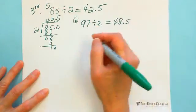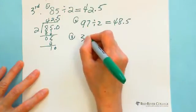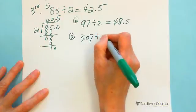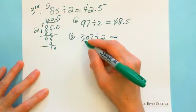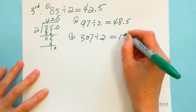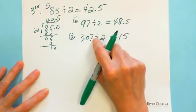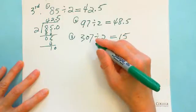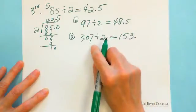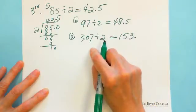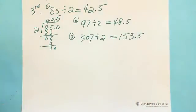Even with 3-digit numbers: 307 divided by 2. 3 divided by 2 is 1 with remainder, making 10 — that's 5. Then 7: 6 is divisible, so 6 divided by 2 equals 3. And 1 remainder, carry down 0, giving 0.5. So the answer is 153.5.